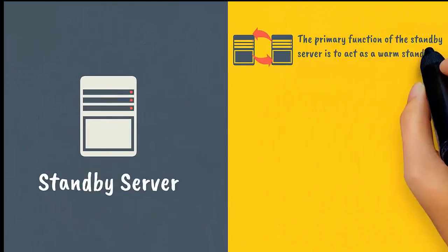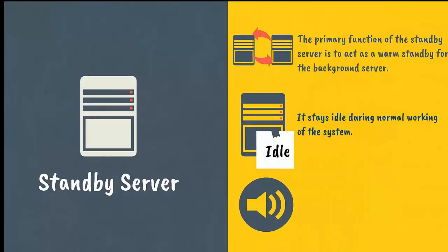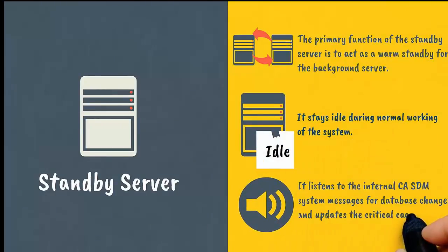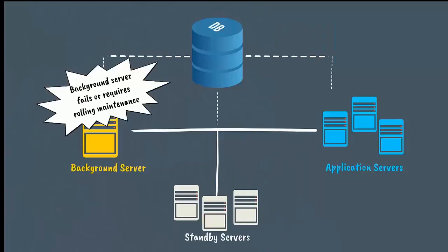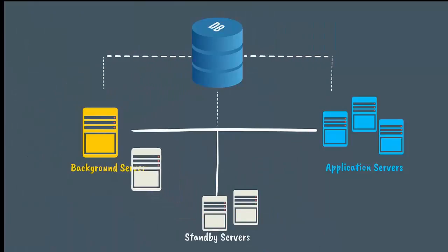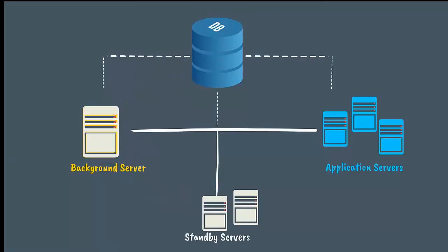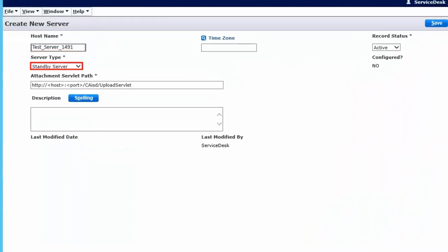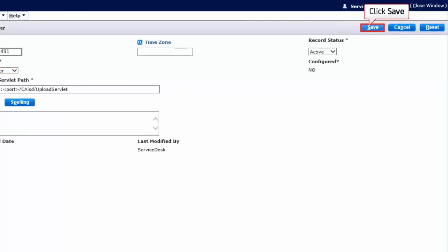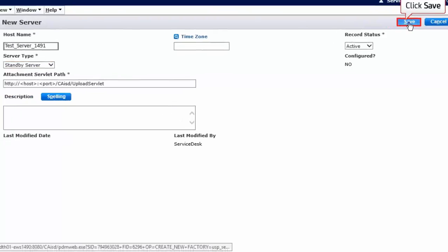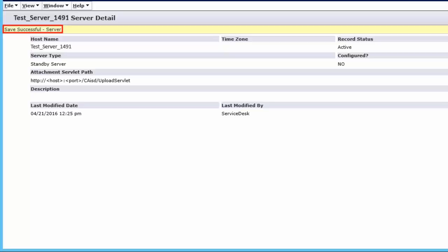Click Create New to add a standby server. The primary function of the standby server is to act as a warm standby for the background server. It stays idle during normal operation, but listens to internal CASDM system messages for database changes and continuously updates critical caches. If the background server fails or requires rolling maintenance, you can promote the standby server to become the background server. Provide the hostname and server type, then click Save.